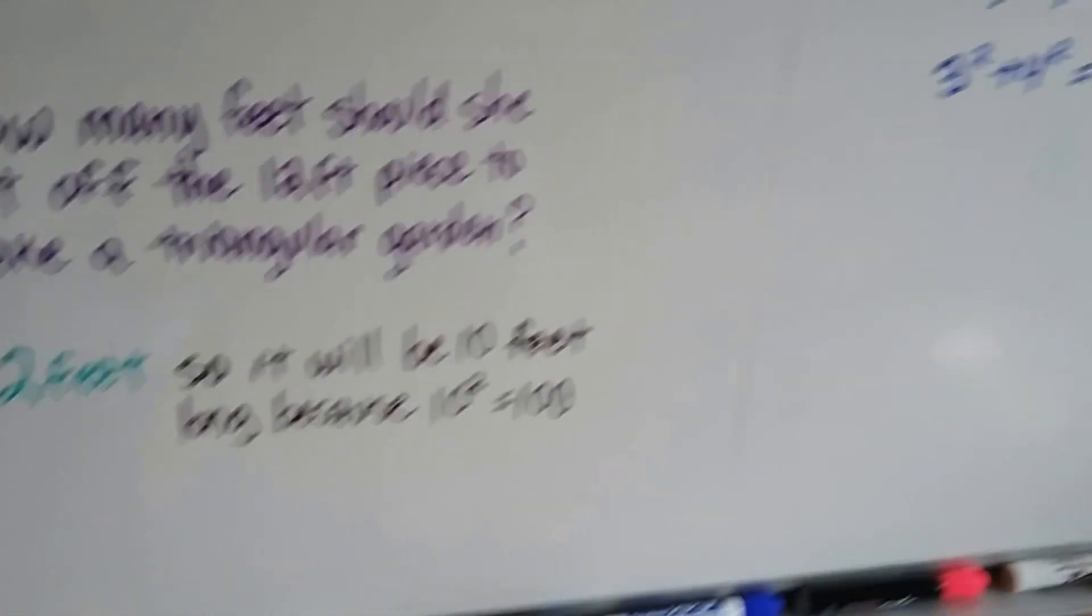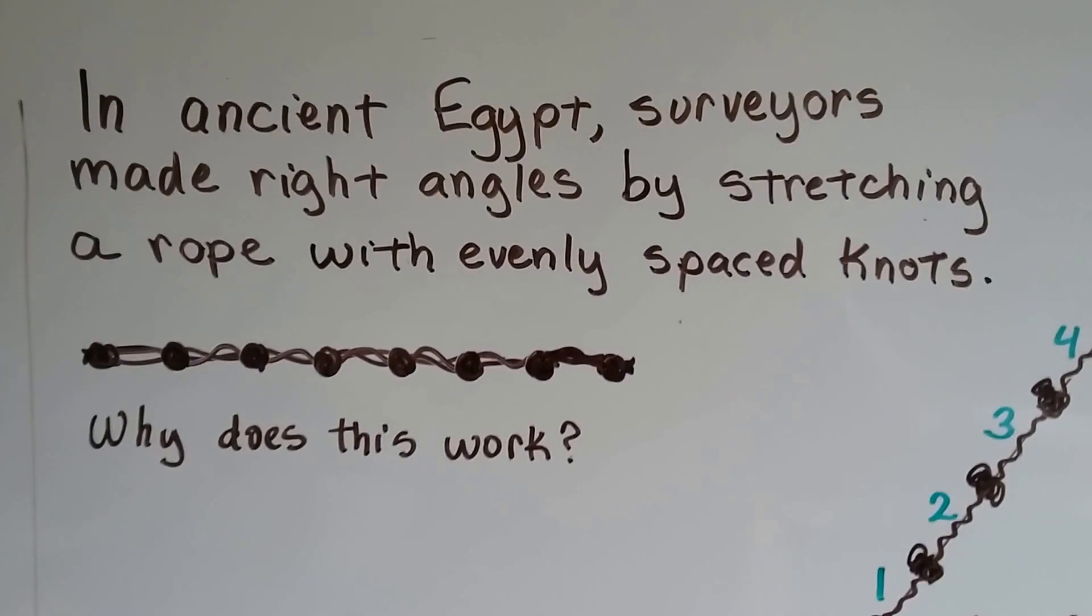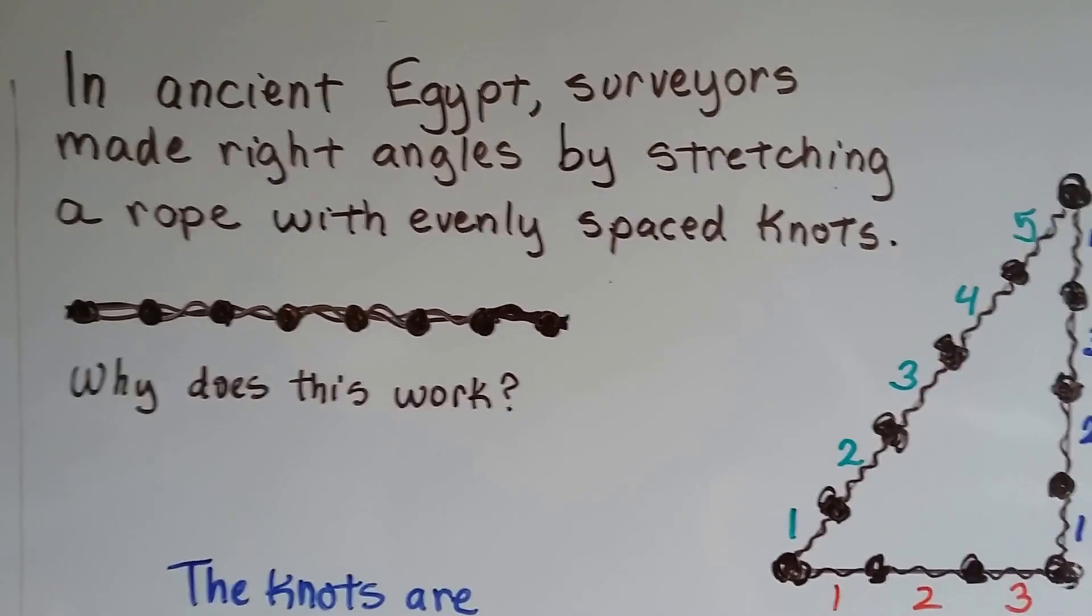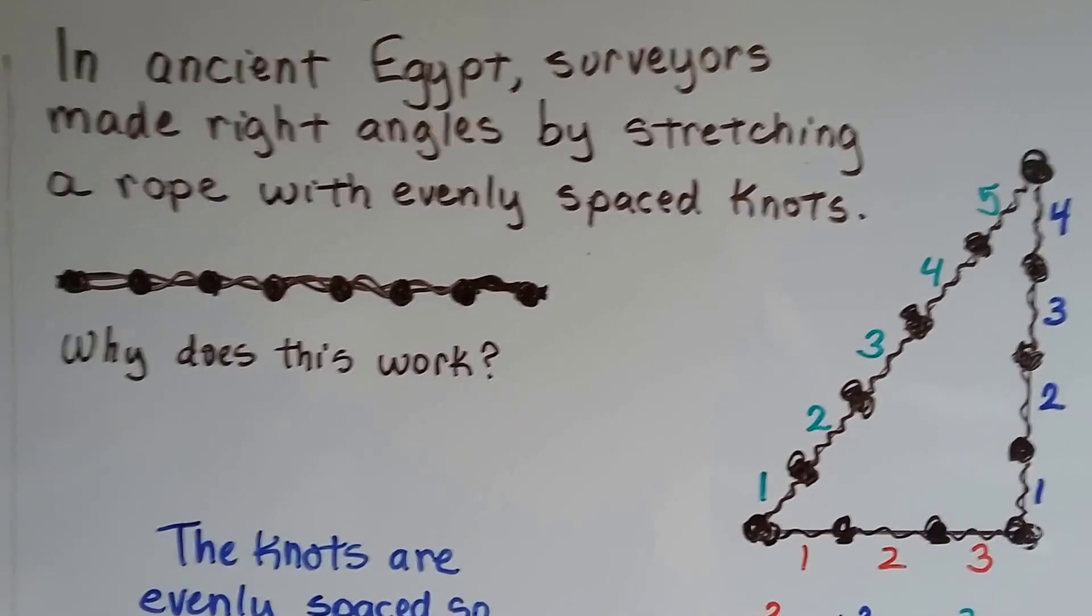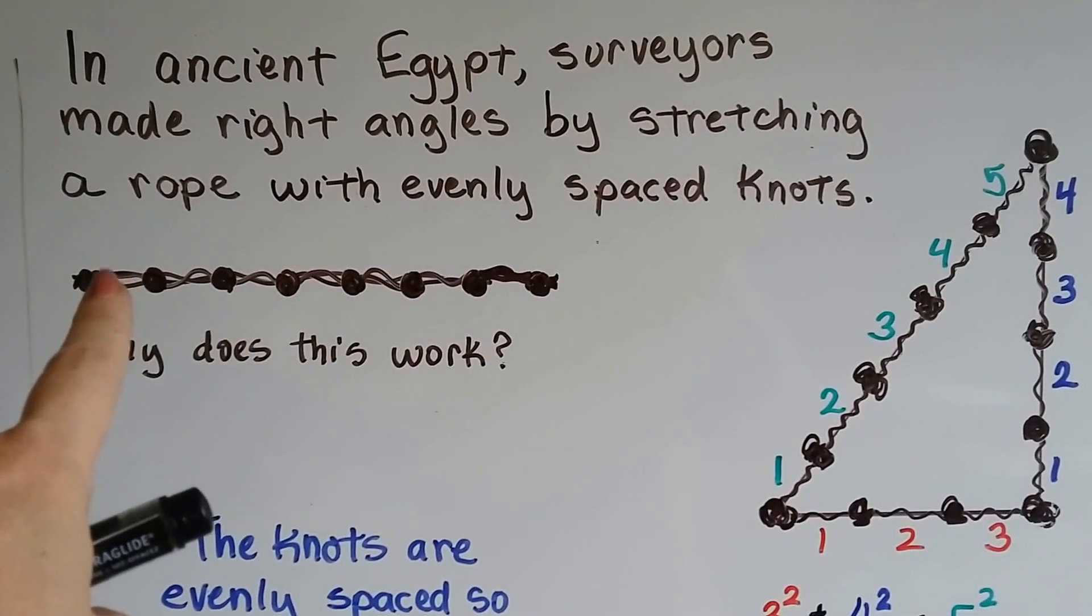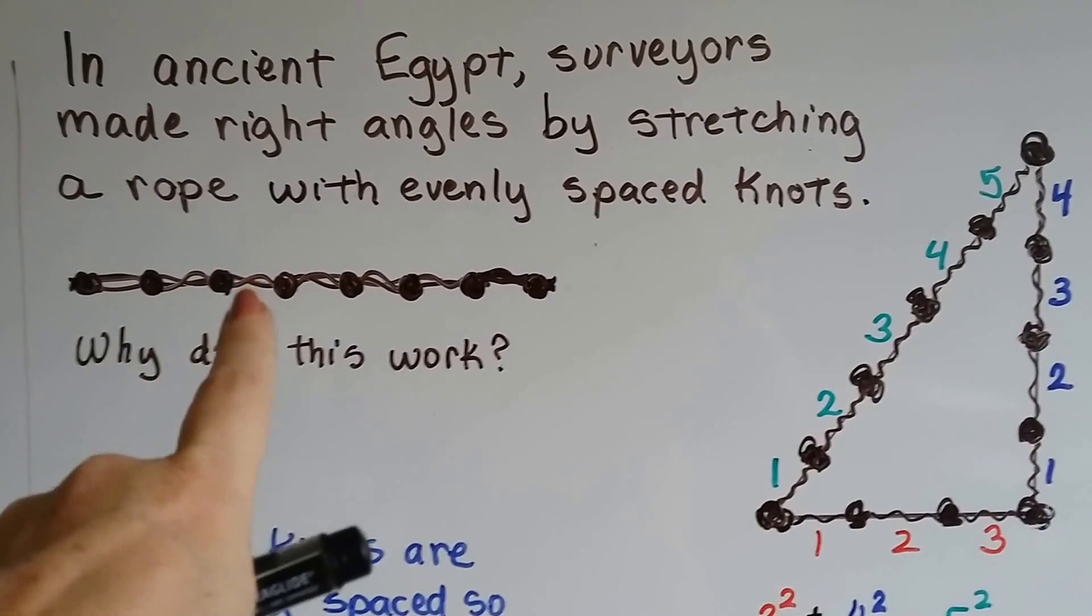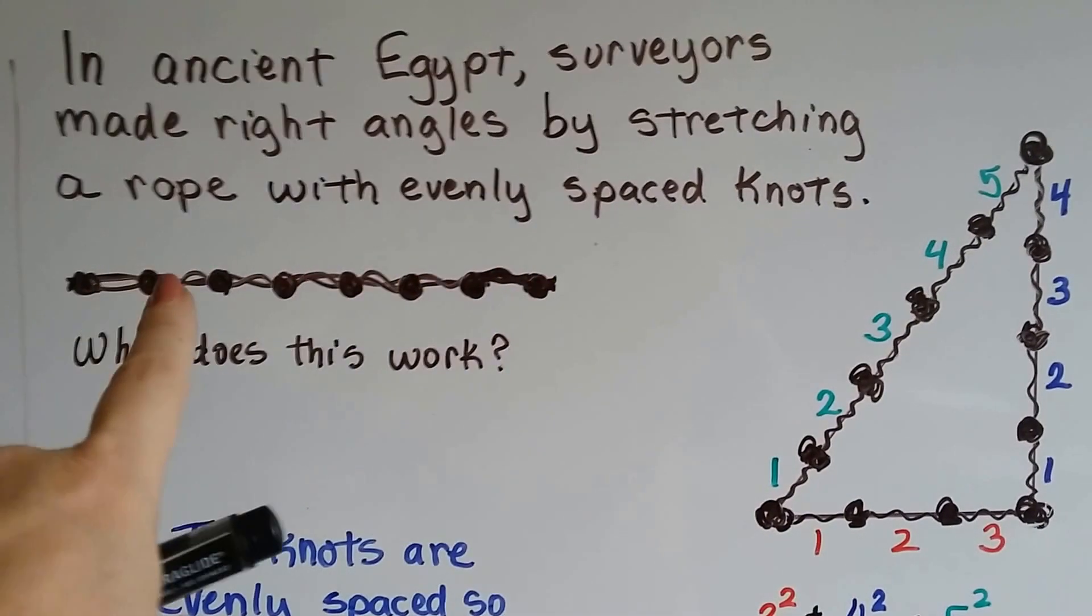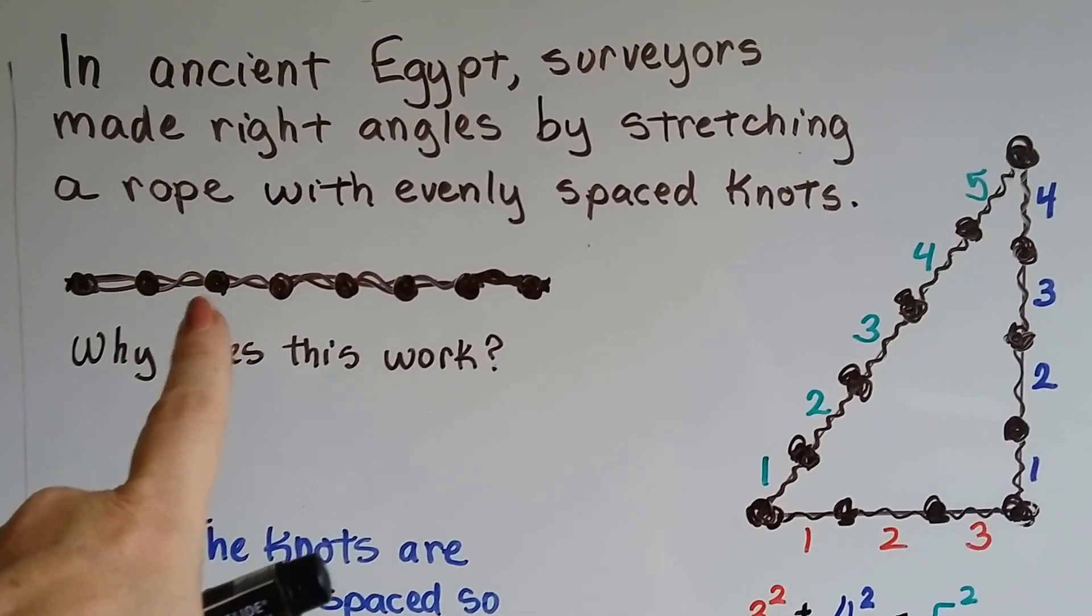Now I'm going to show you a little history. This is kind of fun. Do you know in ancient Egypt that surveyors made right angles by stretching a rope with evenly spaced knots? They would take a rope and put evenly spaced knots on it. It's really important that they're evenly spaced.